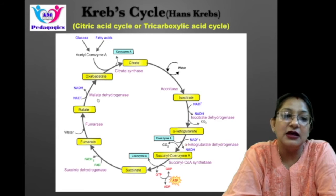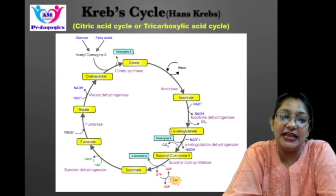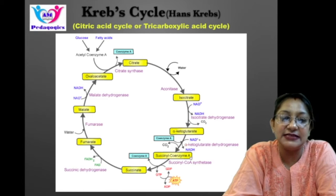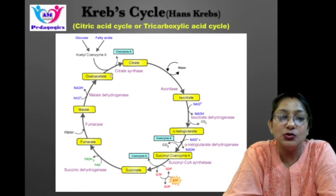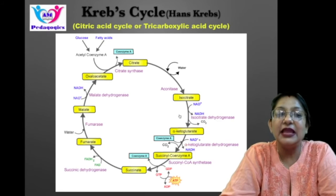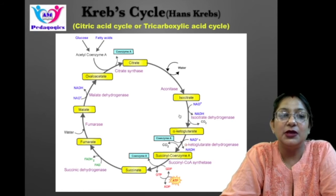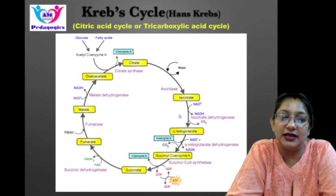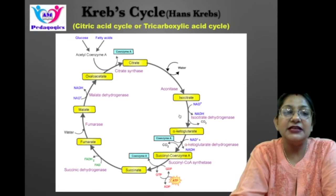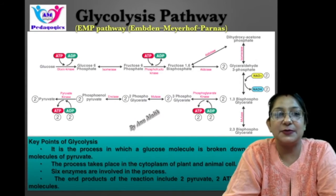Malate dehydrogenase catalyzes the final reaction. In the complete cycle, the intermediates are: citrate, isocitrate, alpha-ketoglutarate, succinyl CoA, succinate, fumarate, malate, and oxaloacetate — in series. The Krebs cycle is known as an amphibolic pathway. With that, let's move to the next process: glycolysis.